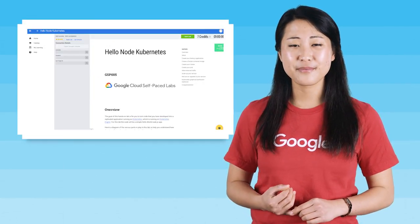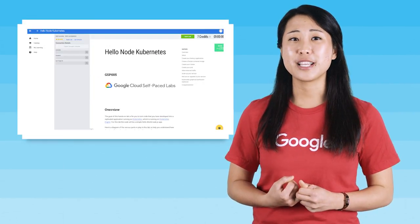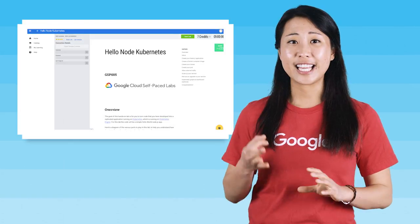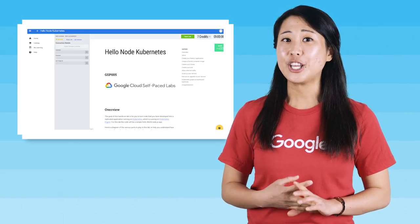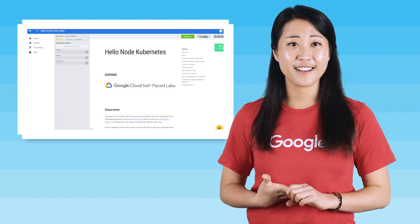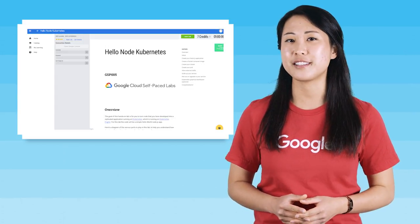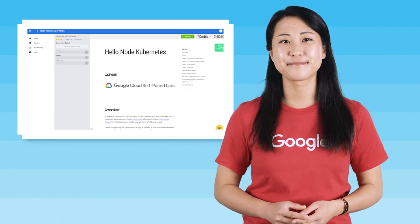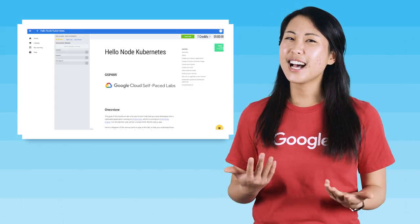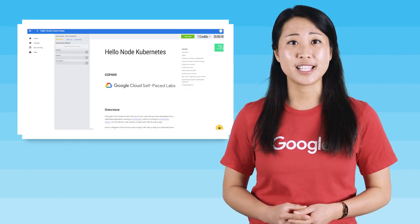This lab will take about an hour to complete. You'll create a Node.js server, a Docker file that describes the image you want to build, a container cluster, then a Kubernetes pod, and then scale up your services in case you suddenly need more capacity for your application. The lab only scratches the surface of this technology, and we encourage you to explore further with your own pods, replication controllers, and services.